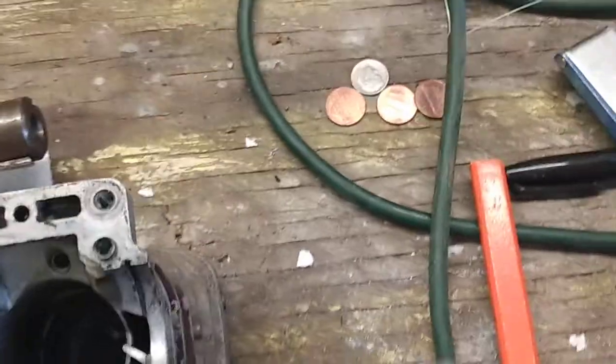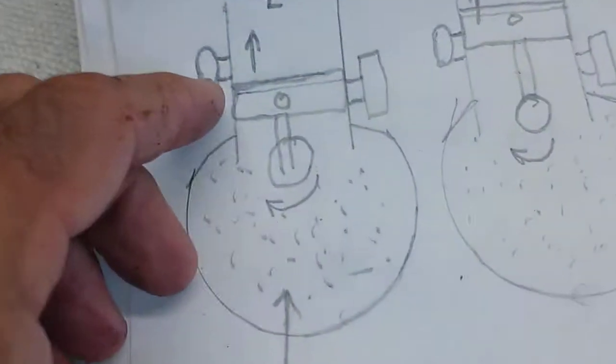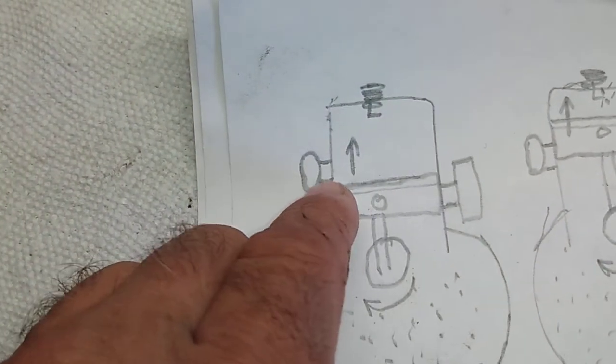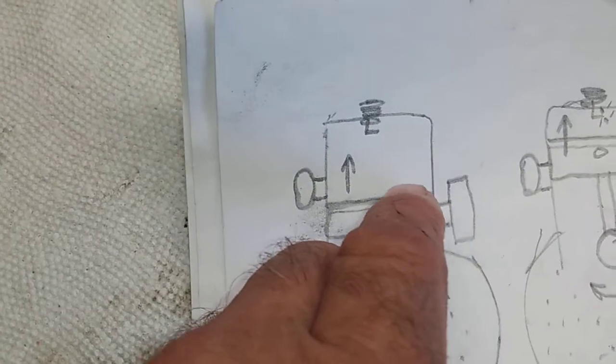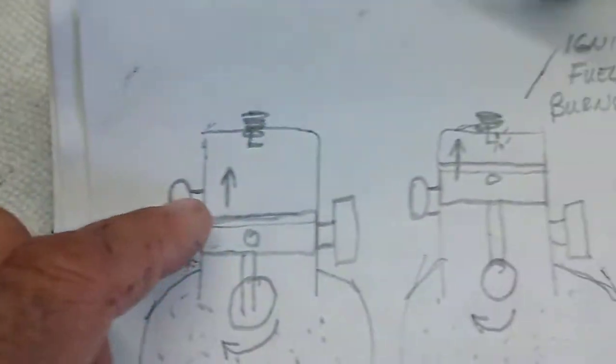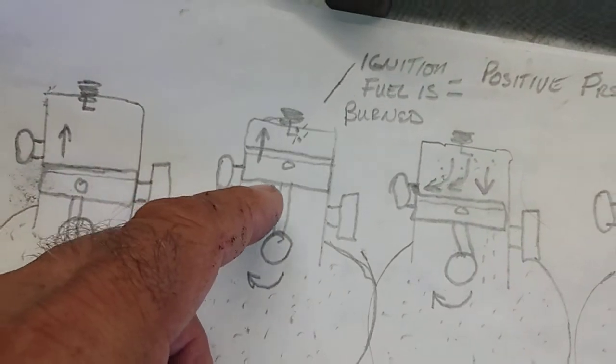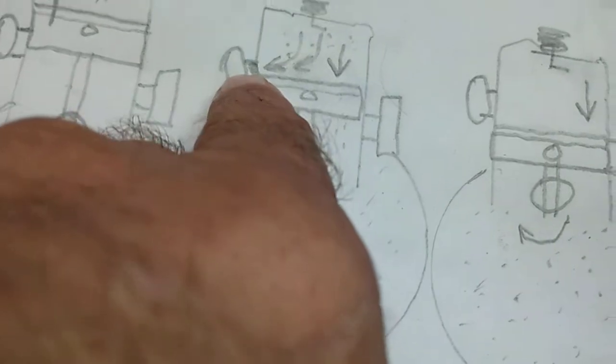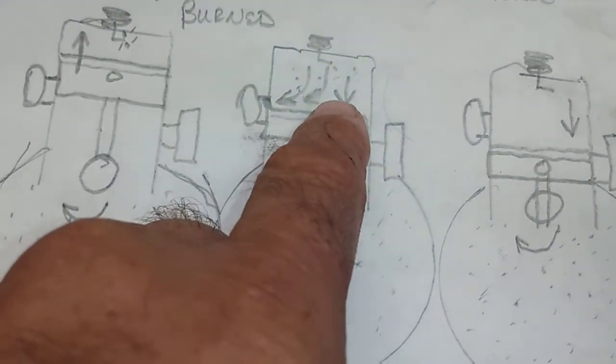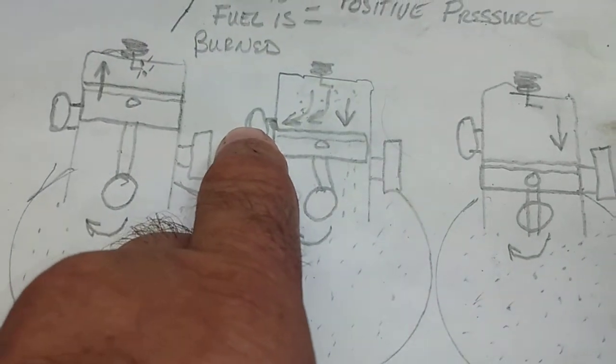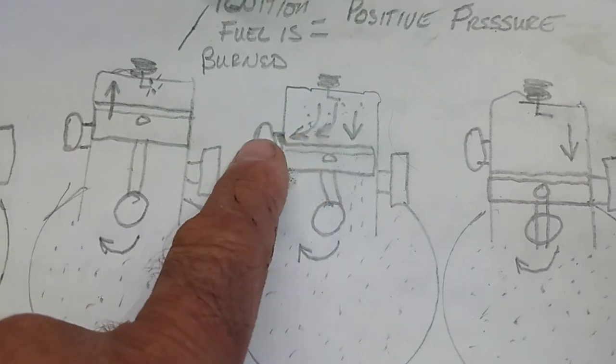Then the piston does its thing - it compresses it and then it fires. And then by timing, if you look at this picture, this exhaust port is higher - it's higher than the side ports. So after ignition, when the piston is coming down, that's the first place that this exploded fuel has a chance to exit.